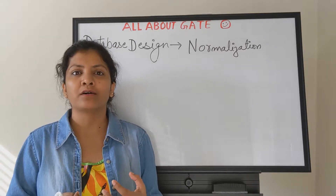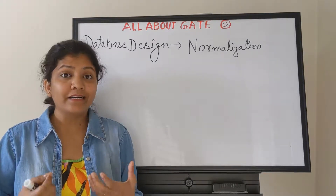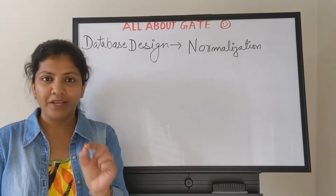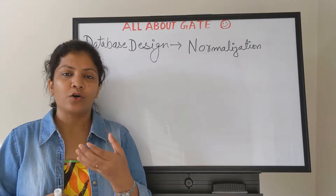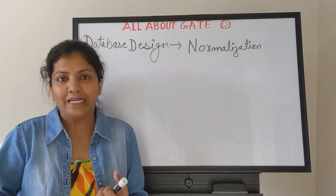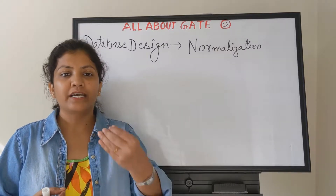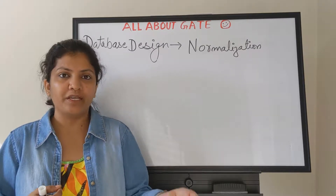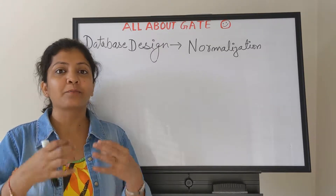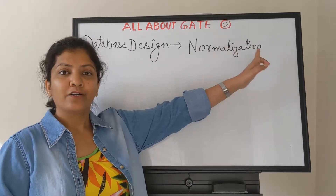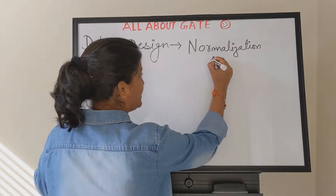Normalization is a process which is used to reduce the level of redundancy in a relation. Redundancy means the repetition of data in a relation or database. The same value gets repeated again and again — the meaning remains the same, but the number of places it appears in your database increases. So we try to minimize that, and the process we follow to minimize it is known as normalization.